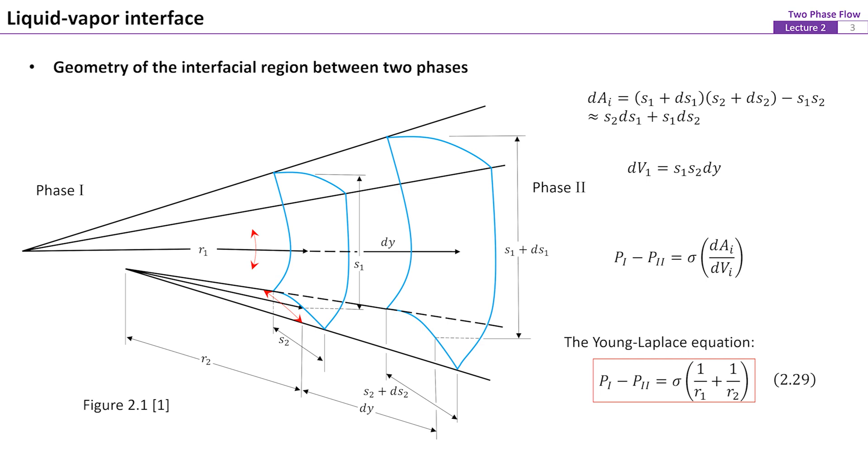This figure shows a representative geometry of the interfacial region between two phases. The changes in the interfacial area for a shift of dy approximately equals S2 dS1 plus S1 dS2. The change in the volume of phase 1 is approximately S1 times S2 times dy. From thermodynamics, it can be shown that the pressure difference across the interface between these two phases equals the product of surface tension and dAi divided by dVi.